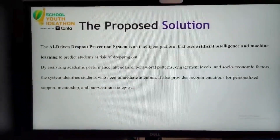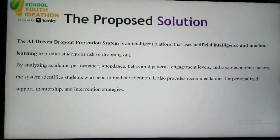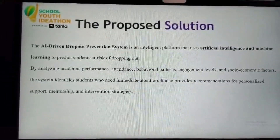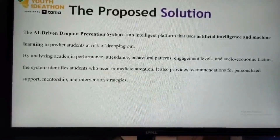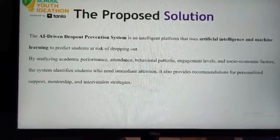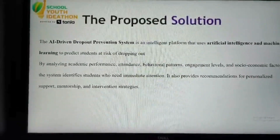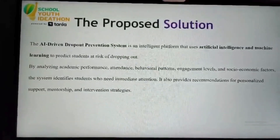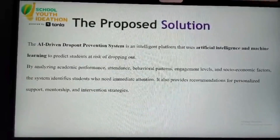The Proposed Solution: The AI Driven Dropout Prevention System is an intelligent platform that uses artificial intelligence and machine learning to predict students at risk of dropping out. By analyzing academic performance, attendance, behavioral patterns, engagement levels, and socio-economic factors, the system identifies students who need immediate attention. It also provides recommendations for personalized support, mentorship, and intervention strategies.